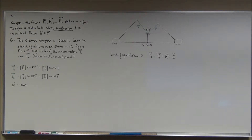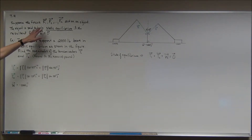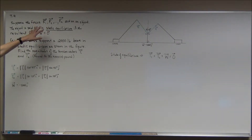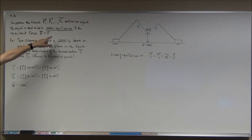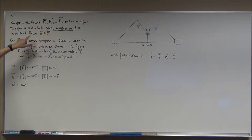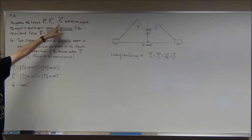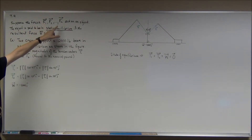So now we know that we can have more than one force acting upon an object. So we have F sub 1, F sub 2, all the way up to F sub n — all these different forces acting on an object. The object is said to be in static equilibrium if the resultant force, which is what you get when you add up all the forces,